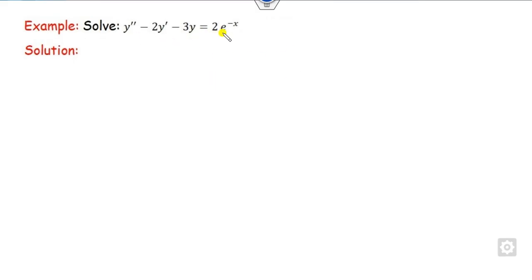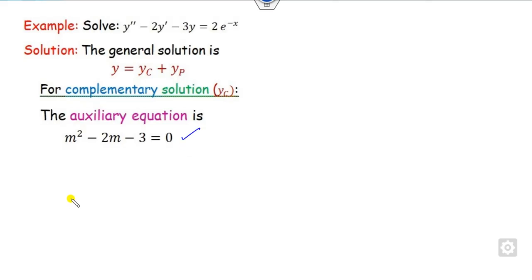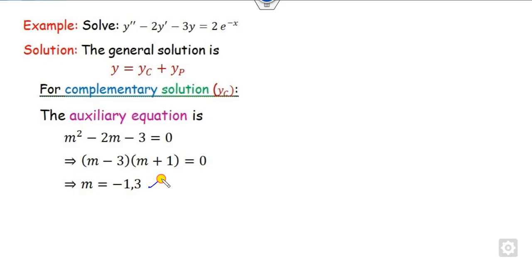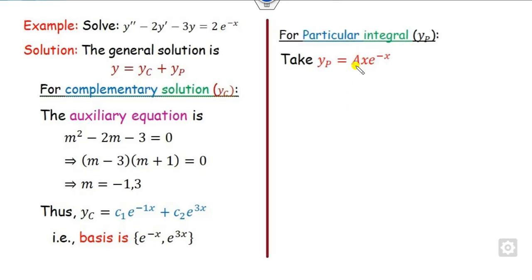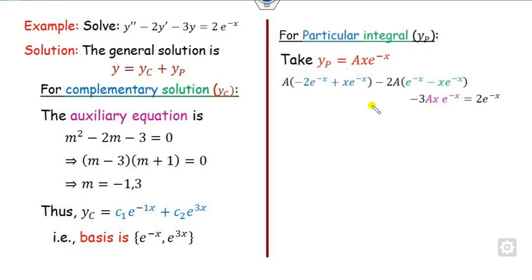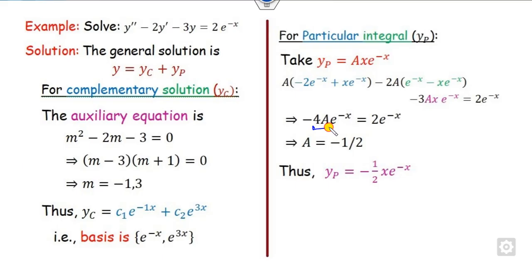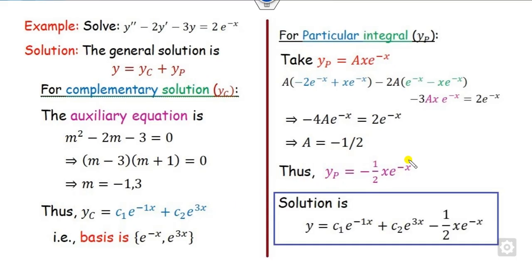Look at the last example. The right-hand side is exponential. We find the auxiliary equation and roots — easily found to be 3 and −1. So we know yc. For yp: we take Ae^(−x) and check whether e^(−x) appears in yc — yes, one time. So we multiply by x, giving yp = Axe^(−x). We compute y' and y'' and substitute into the equation. Since the right-hand side is only e^(−x), terms cancel when we expand. Solving, −4A = 2, so A = −1/2. Therefore yp = −(1/2)xe^(−x). The general solution is y = yc + yp.